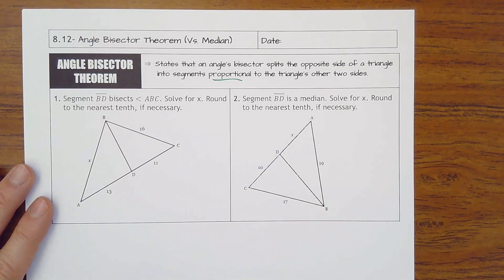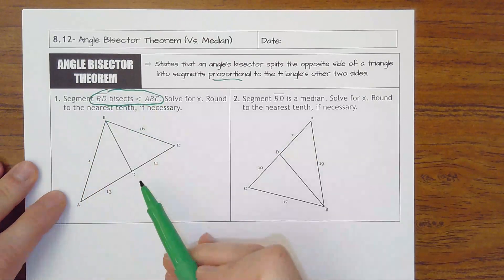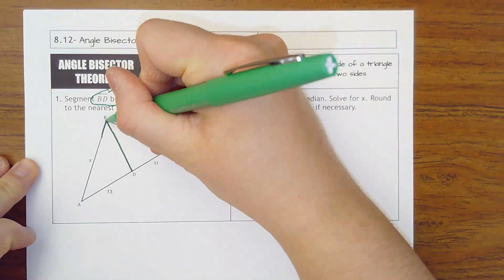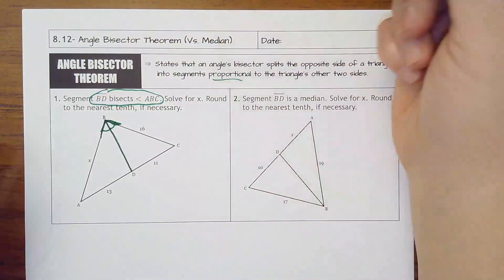So if they tell you that there is an angle bisector, meaning that a line bisects an angle, which means that these two are equal, then you can use this theorem.